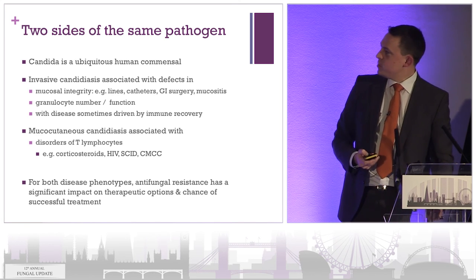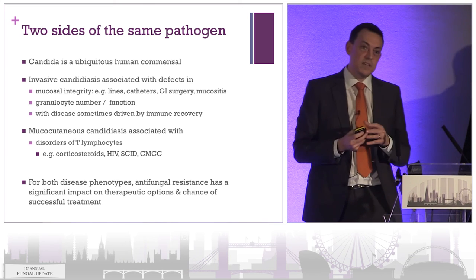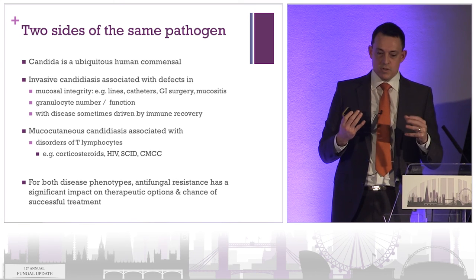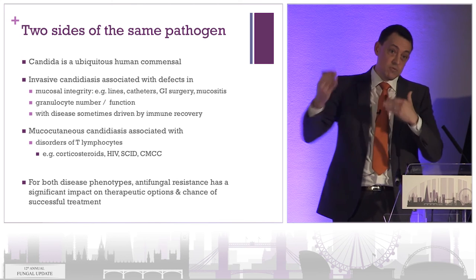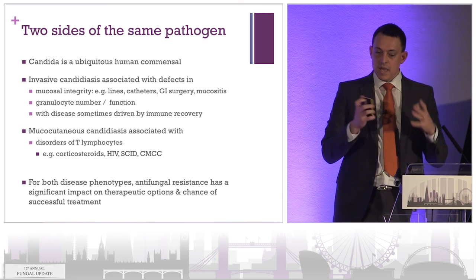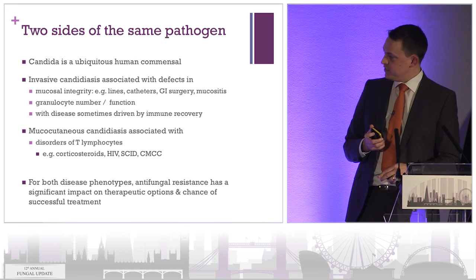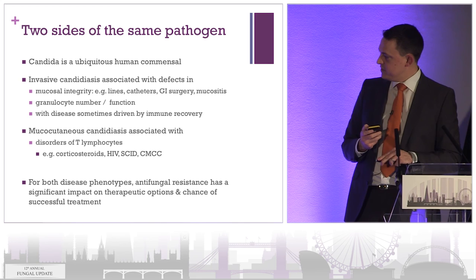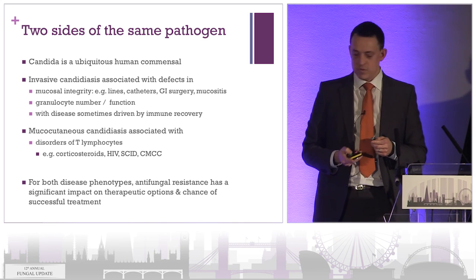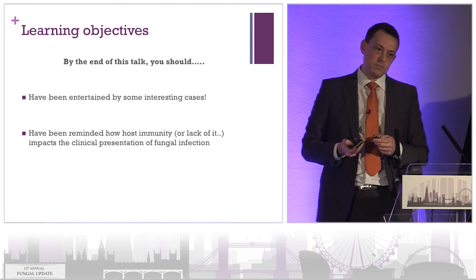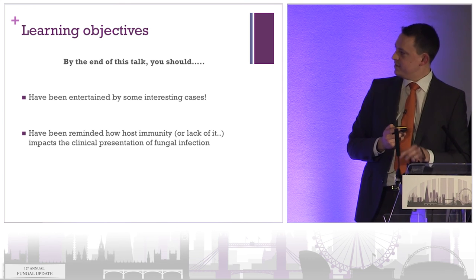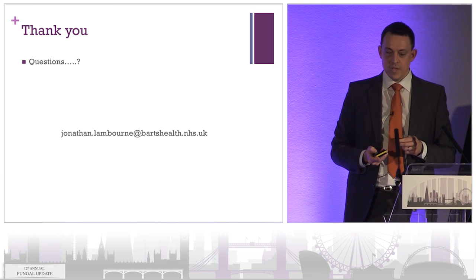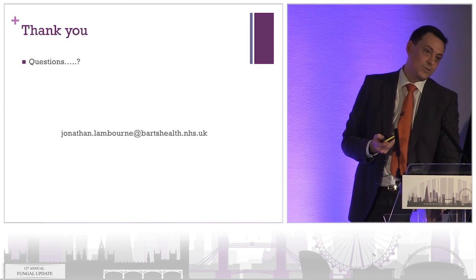Just to wrap things up: candida is a ubiquitous human pathogen. Invasive candidiasis is often associated with defects in mucosal integrity, problems with granulocyte number and function, and as we've seen in the first case, with disease manifestations driven by immune recovery as opposed to immune deficiency. Mucocutaneous candidiasis, on the other hand, is associated with disorders of T lymphocytes — people on steroids, people with HIV, combined immune deficiency — and this really interesting cohort with chronic mucocutaneous candidiasis. With both disease phenotypes, resistance is a real problem. Thank you again for the invitation to speak — I'm happy to take questions now or afterwards.